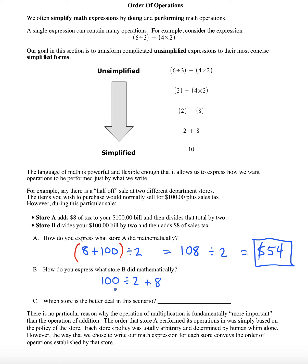Now, when it comes to store B, they're going to divide the $100 right away and then add $8. And that's actually what this expression says. Division takes precedence over addition. So we'll do the $100 divided by $2 first, which gives us $50.